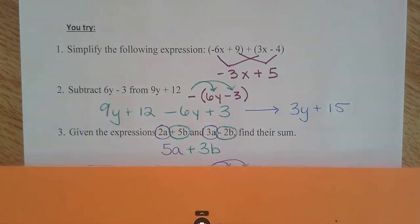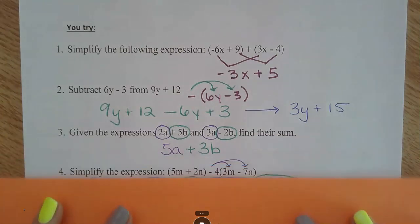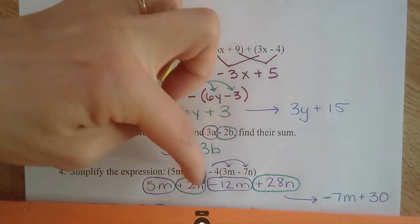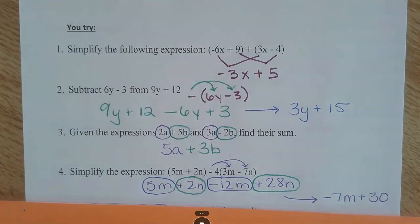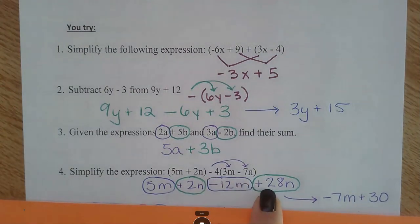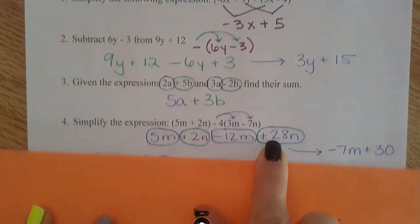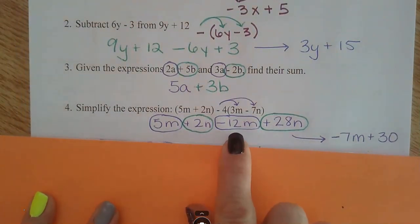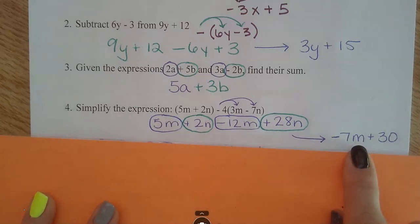When I brought everything down and combined like terms, I ended up with 3y and 15. The third one had nothing to distribute, so I'm just looking for like terms: 5a and 3b. Number four, I needed to distribute — so I distributed that negative 4 and rewrote it. Check your math: negative 4 times negative 7 makes a positive 28. Then I combined my m's and n's and got my answer.